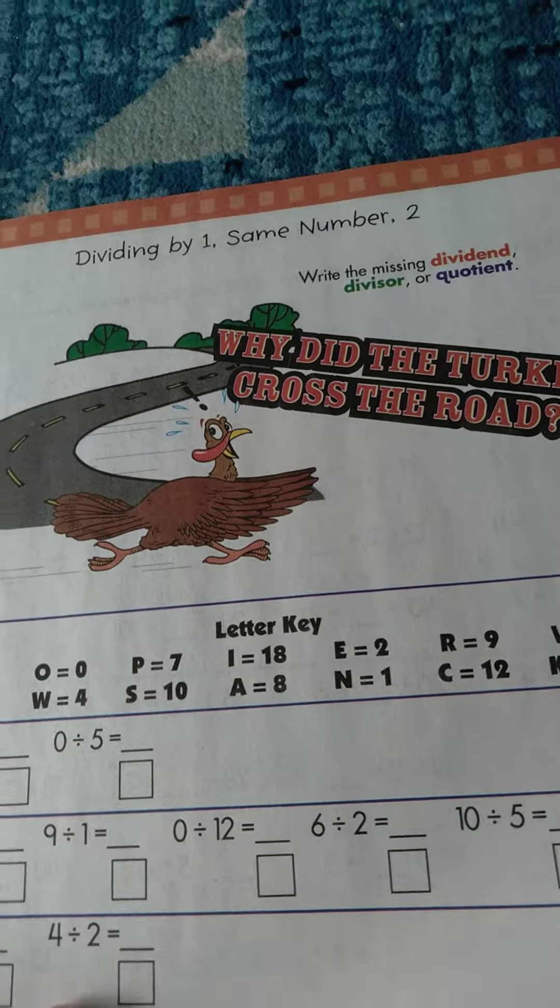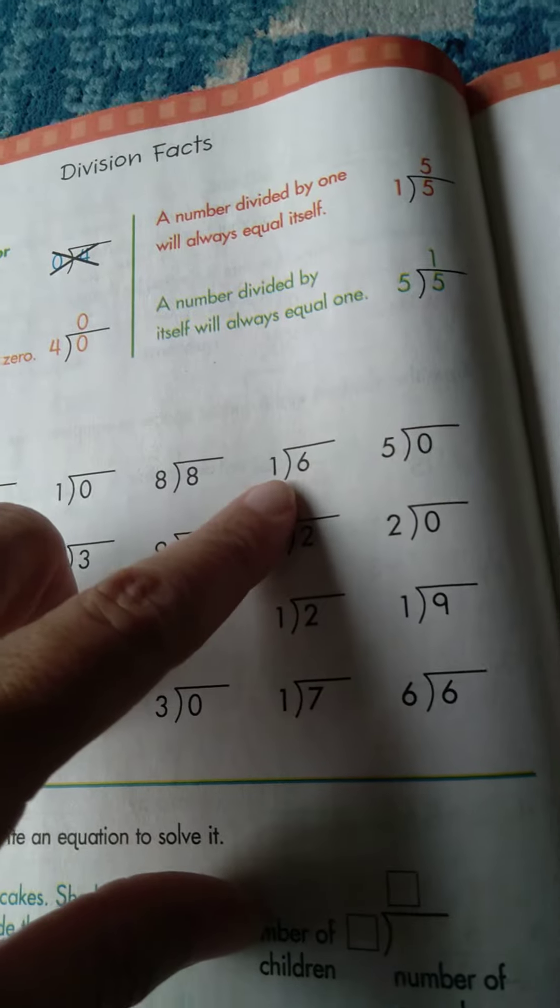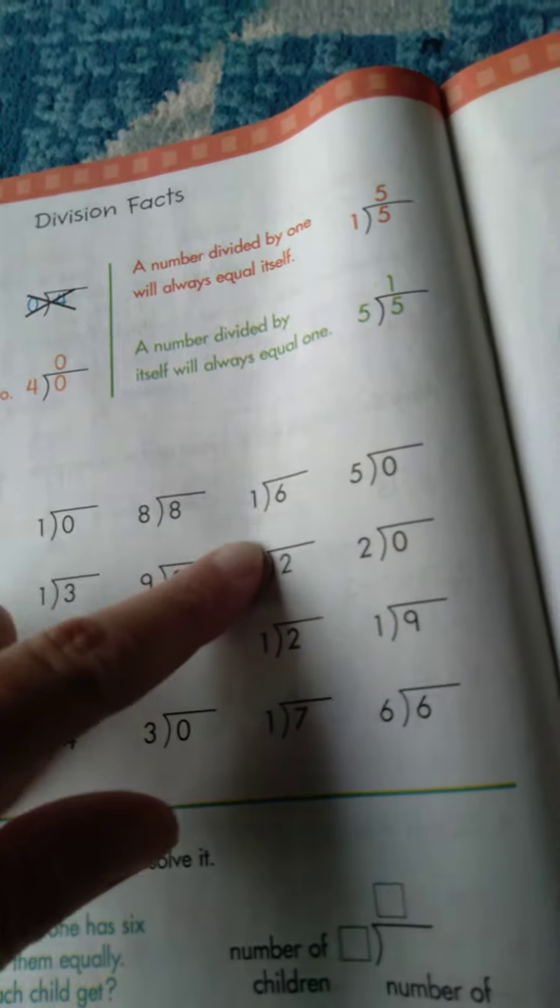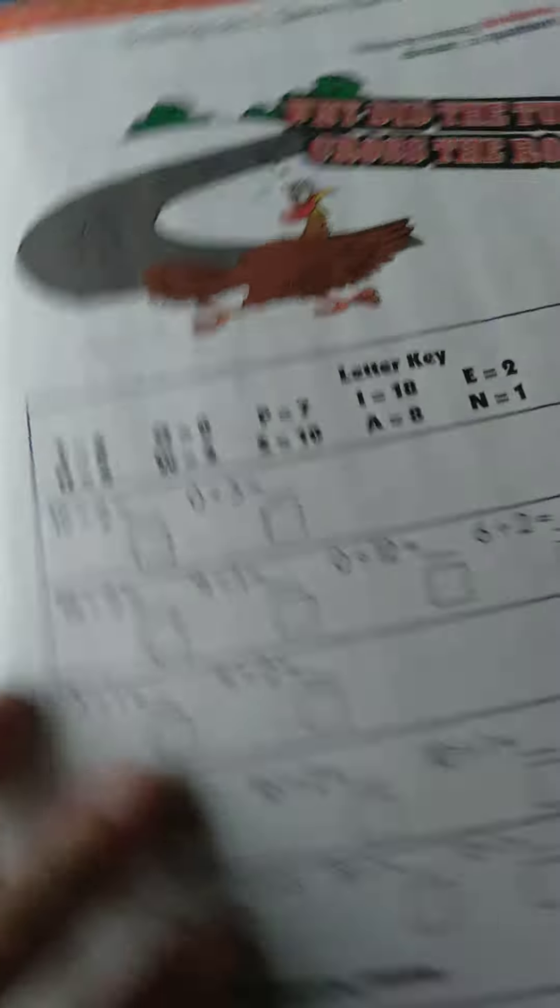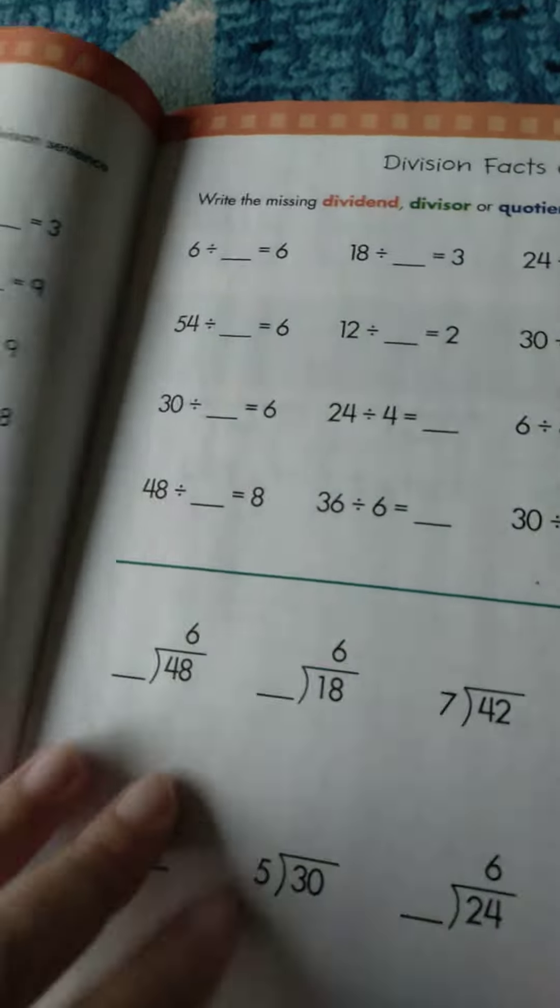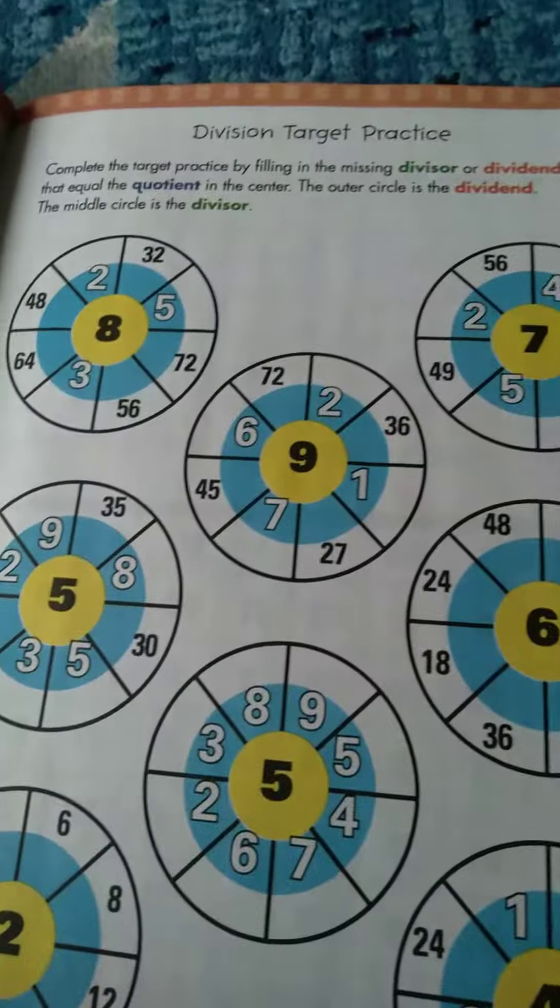Why did the turkey cross the road? Division facts, right? So, they're written out in different ways. That is what I like. You get used to writing it this way, you get used to writing it this way. And then, there are others here.